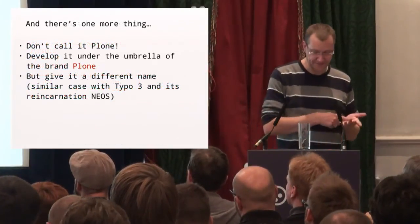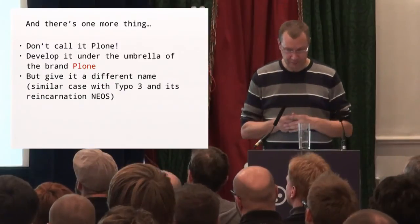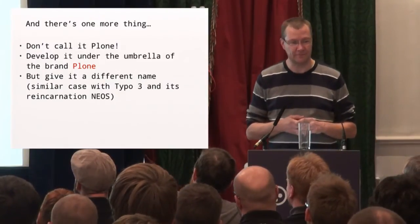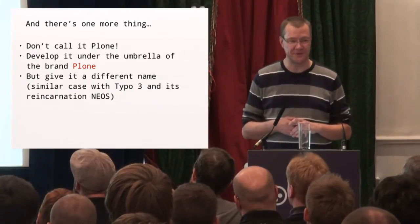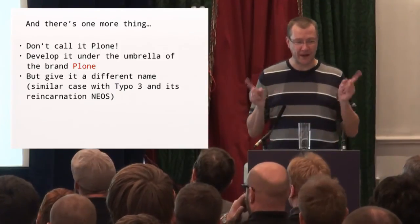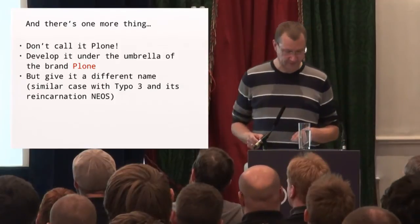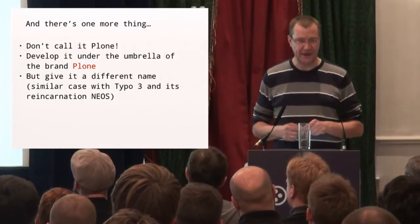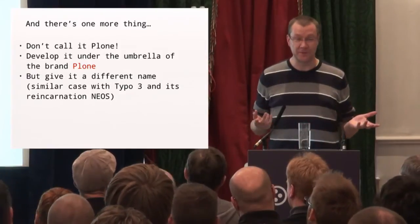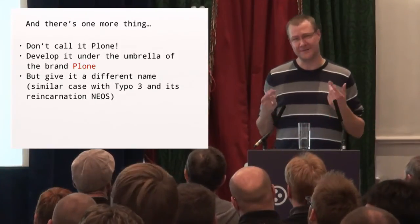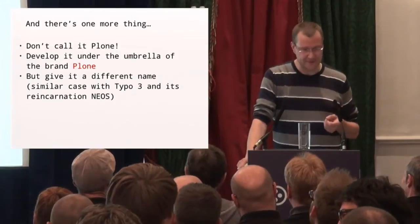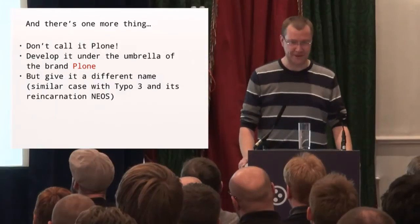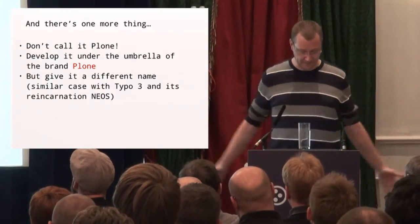If we are going to rewrite Plone in several years and release a new version in 2020, I would never ever call it Plone. You could develop it under the Plone umbrella, but as history told us with Zope 2 and Zope 3 confusion, I'd give it a completely different name. It could be placed under the umbrella of Plone, but call it Bob or whatever.